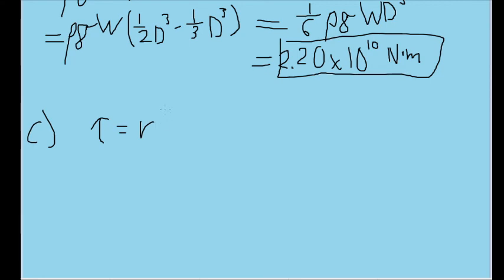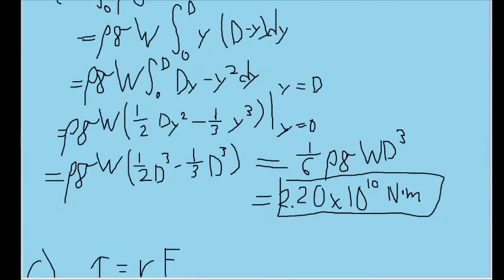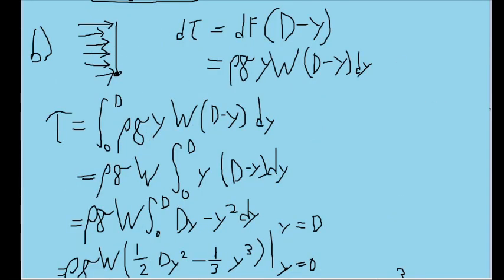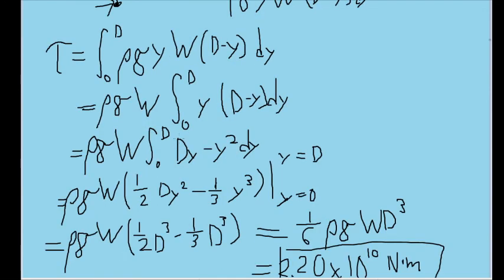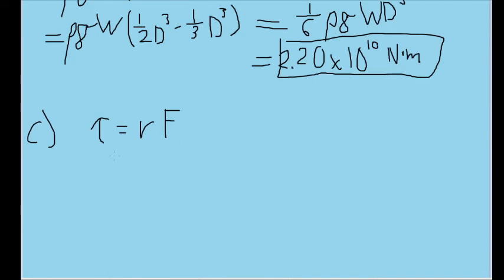We can find the length of the lever arm by recalling that the formula for a torque is where the torque is equal to the lever arm times the force applied, where r and F are perpendicular to each other, which they are in this case. Now we spent the previous two parts of the problem solving for the torque and the force, so now all we need to do is solve for r.